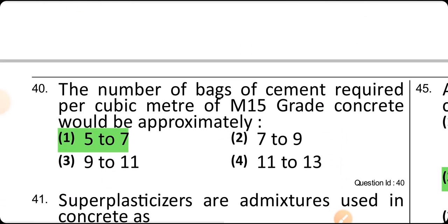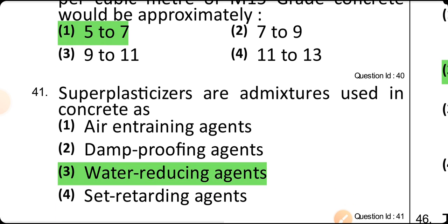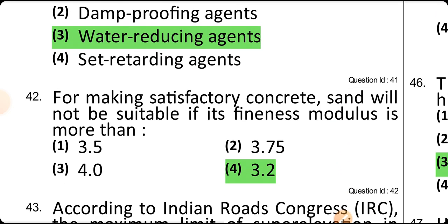Number of bags of cement required per cubic meter of M15 grade concrete is approximately 5 to 7 bags. Superplasticizer is used in concrete as a water-reducing agent. For making satisfactory concrete, sand will be suitable if its fineness modulus is more than 3.2.